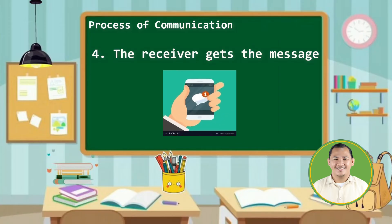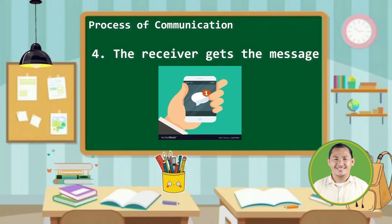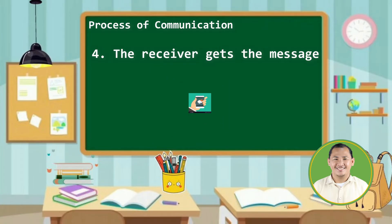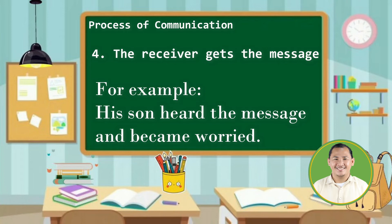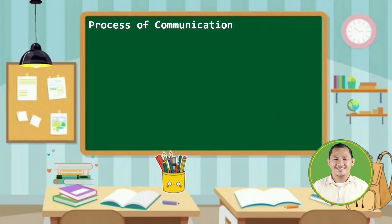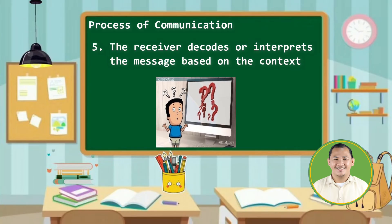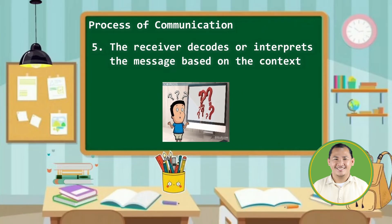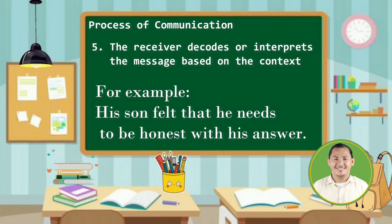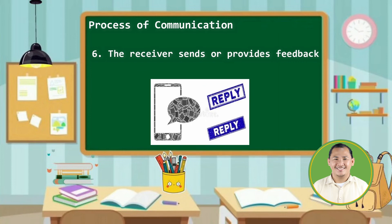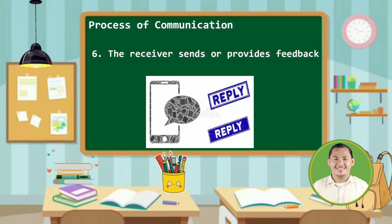Number four, the receiver gets the message. Number five, the receiver decodes or interprets the message based on the context. At this time, the receiver understands the message and is thinking of ways on how to react to it. For example, his son felt that he needs to be honest with his answer. Number six, the receiver sends or provides feedback. Always remember that the feedback could be verbal or non-verbal.